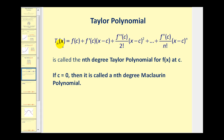If we want the degree n polynomial approximation to a given function, this would be the given formula. For the degree one part, we need the value of the first derivative wherever the polynomial is centered. For the degree two part, we have the value of the second derivative evaluated at c, divided by two factorial, and so on out to the degree n part, where we have the nth derivative evaluated at c divided by n factorial. This is called the nth degree Taylor polynomial for f of x at any given value of c. And if c happens to equal zero, we can call this a Maclaurin polynomial.